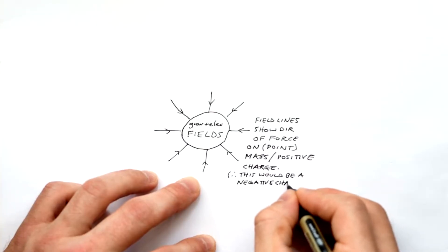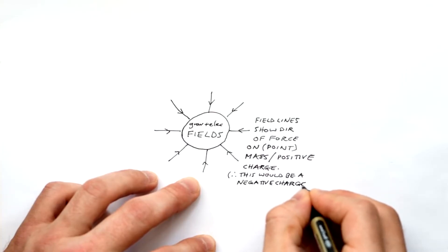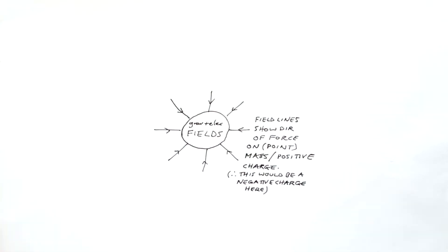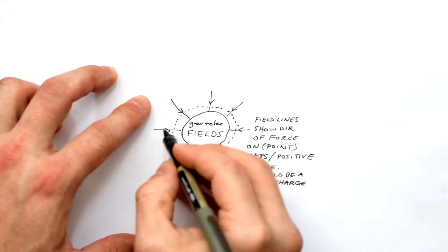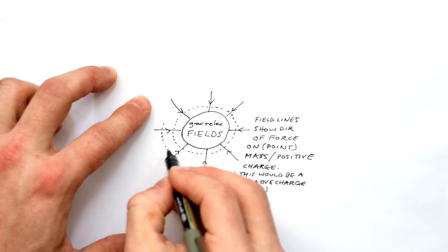So for this diagram, it could be a planet in the middle or it could be a negative charge in the middle. If it was a positive charge, then the lines would go away. And I'm going to draw some equipotentials on there ready for a little bit later on. And we can see that this is a radial field.